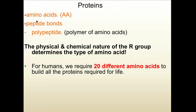Let's talk about the word polypeptide. A polypeptide is a polymer of amino acids — just a string of amino acids hooked together. Notice that the word peptide is used for proteins. The physical and chemical nature of the R group determines the type of amino acid, and for humans we have 20 of them.